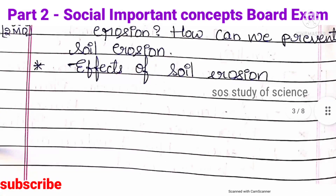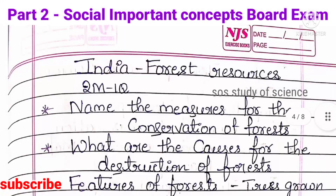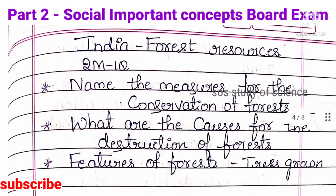Moving to the next lesson — India Forest Resources. Here you can expect one 2-mark question. The important concepts are: Name the measures for the conservation of forests. What are the causes for the destruction of forests? Features of forests. You can also expect questions on which trees are grown in different areas. These are very important concepts from India Forest Resources.